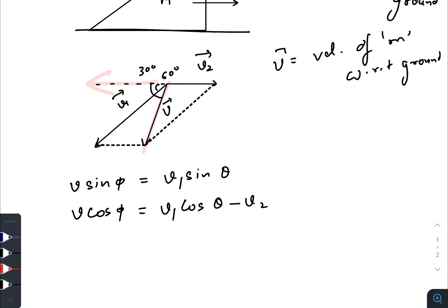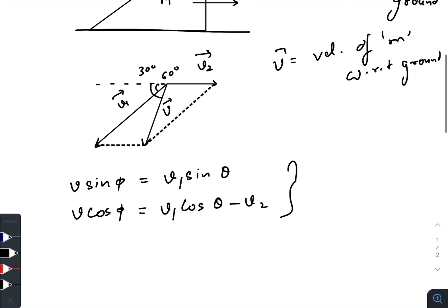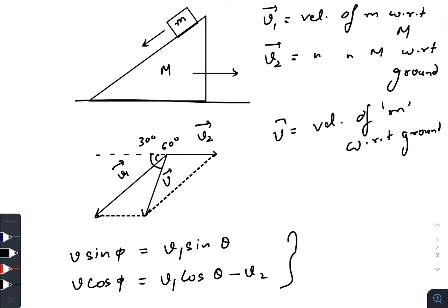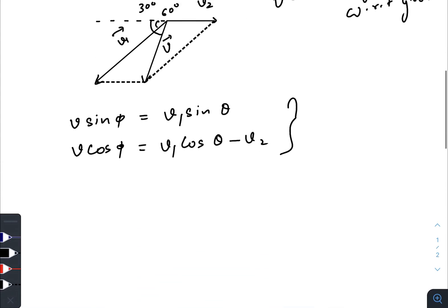And the horizontal component of v, that is v cos phi, equals v1 cos theta minus v2, because v1 cos theta is in this direction and it is reduced by some amount due to v2. These are our two equations at the beginning. And one more thing: the momentum along the horizontal direction will be conserved because there is no net force in the horizontal direction.